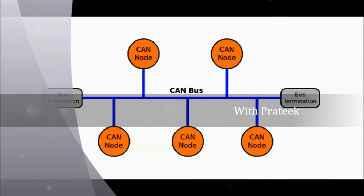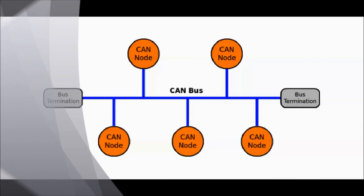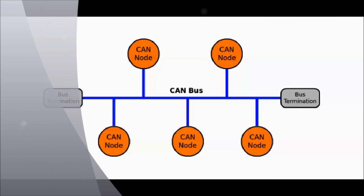Hello guys, I'm Pratik. Today we'll discuss CAN bus basics — how CAN bus looks, how a CAN frame is structured, some scenarios of CAN error handling, and CAN bus overall. CAN was developed by Bosch in 1983, officially released in 1986, and was basically developed for automotive applications. CAN stands for Controller Area Network.